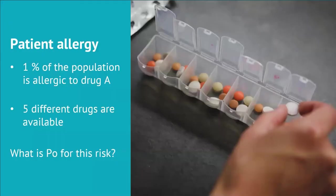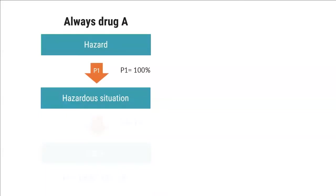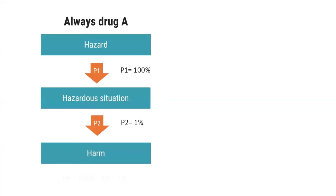Instead of just talking theory, let's look at a software example. We assume that one percent of the population is allergic to drug A, and we have five different drugs to choose from. The software fails by selecting the wrong medication. What is the PO for this risk? The answer is: it depends on the type of software failure — either the software randomly selects one of the five drugs, or the failure always results in choosing drug A. If drug A is always selected, it always results in a hazardous situation, but there's only a one percent likelihood that it will actually harm someone.